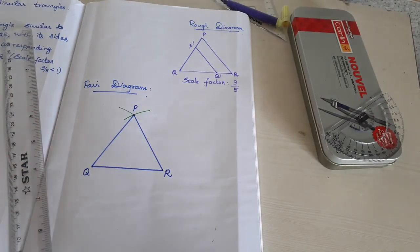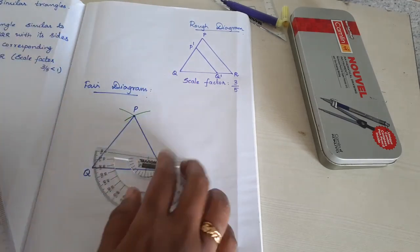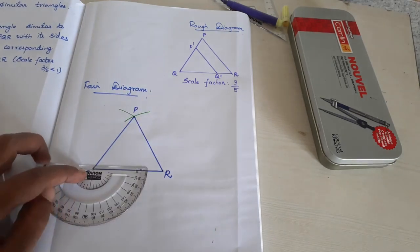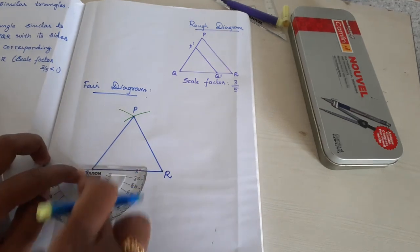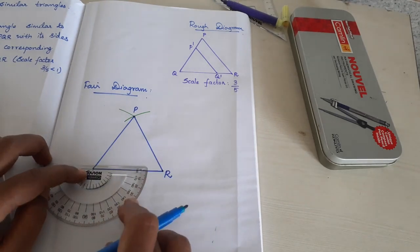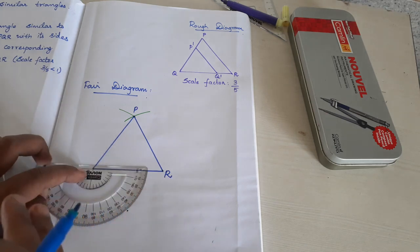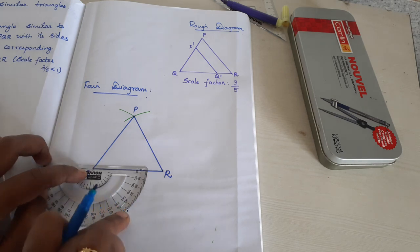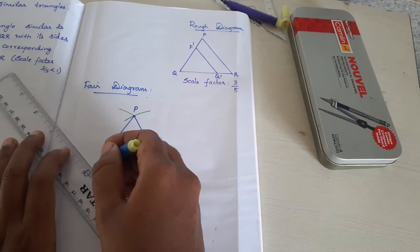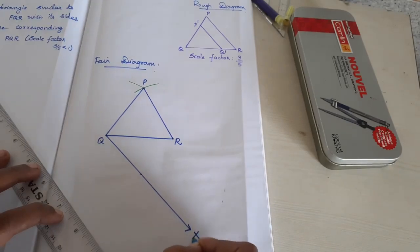The second step: take your protractor, reverse it, and place it at Q. Take any degree less than 90 — any one acute angle between 0 and 90 degrees. I am selecting 45 degrees. After that, join this line and mark it as Ray X. As per your wish, you can select 40 or 50 degrees, but it cannot exceed 90 degrees.